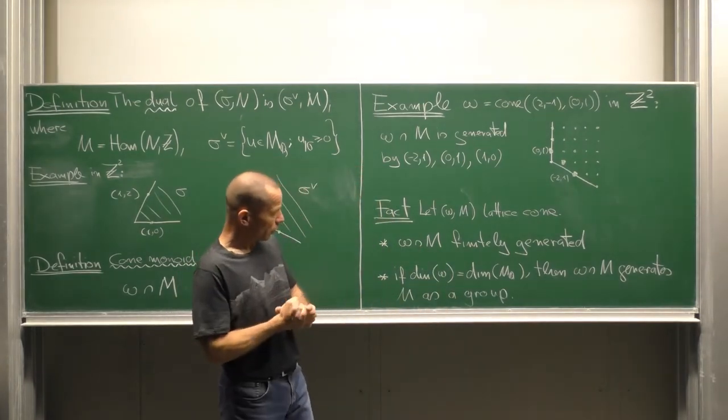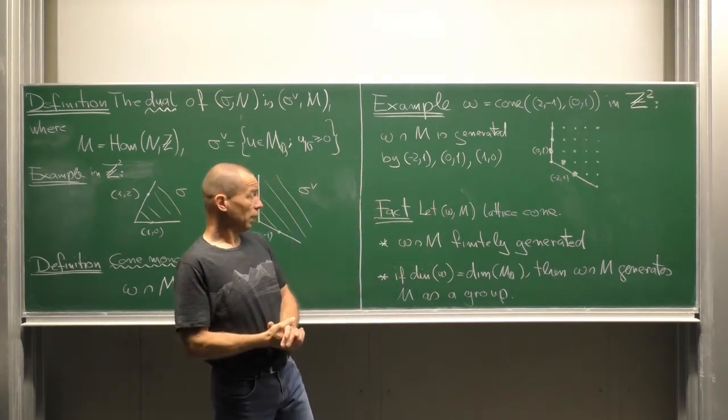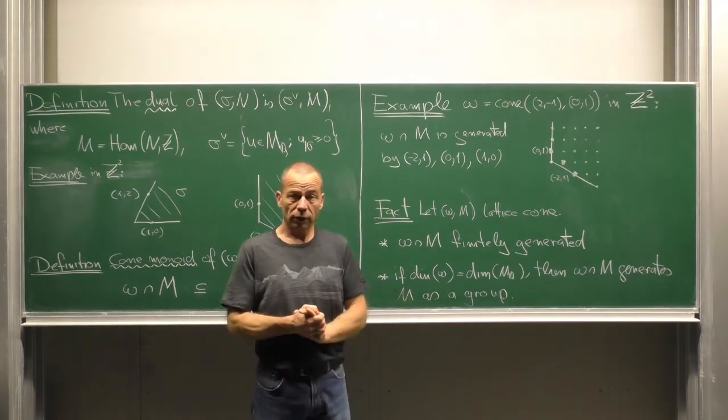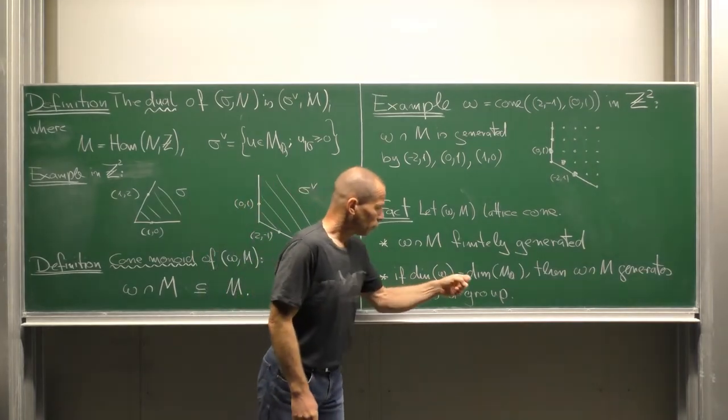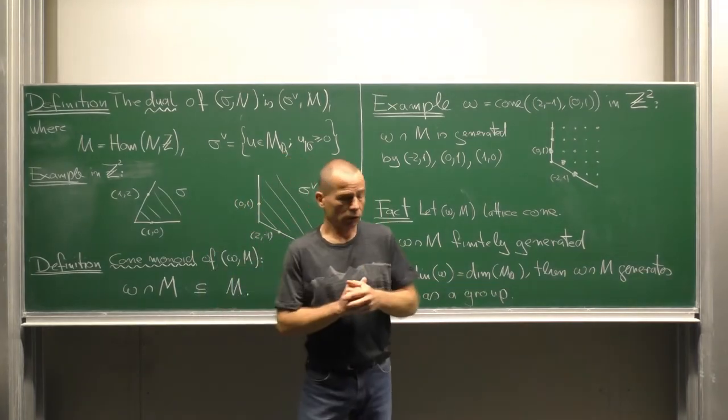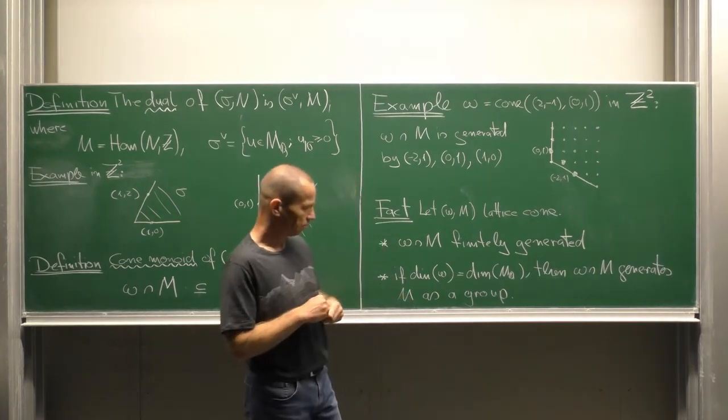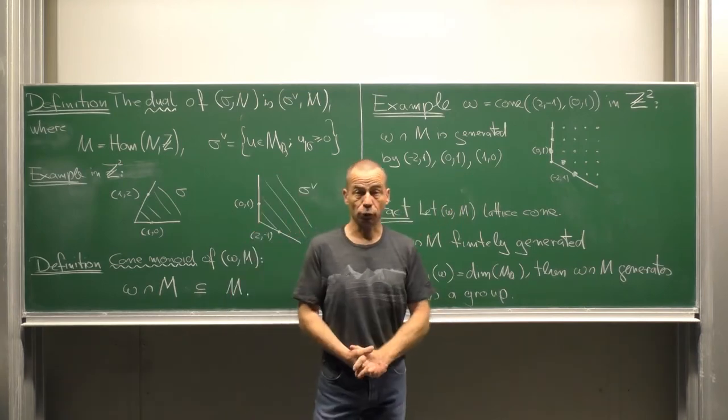This is part of a general effect for a general lattice cone omega in N. The cone monoid is always finitely generated. Moreover, if the dimension of omega equals the dimension of N_Q, that means that omega is of full dimension, then the cone monoid generates the lattice as a group.